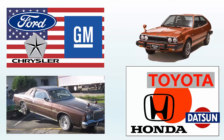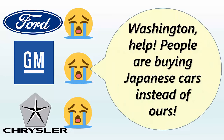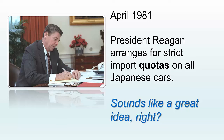American consumers, growing tired of driving large, inefficient American cars, started turning to Japanese cars, meaning less business for the American car companies. The Big Three were unhappy and turned to Washington for help. So in April 1981, President Reagan arranged strict import quotas on all Japanese cars, limiting the total number of Japanese cars that could come into the country — after a certain number, no more could come in.